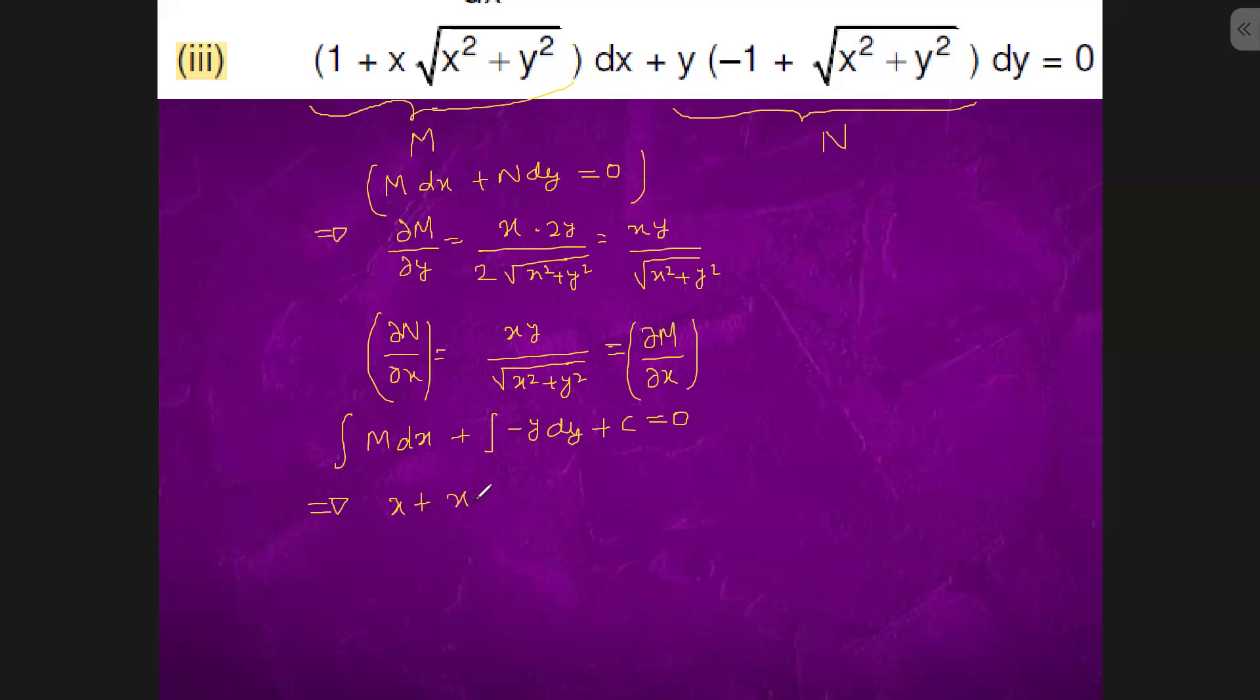And here minus y dy is y square by 2 plus c equals to zero. So if you multiply with 2 and divide with 2, this is the differentiation of x square plus y square.